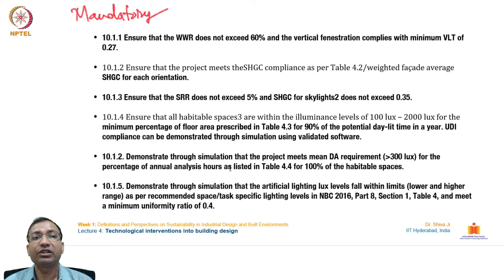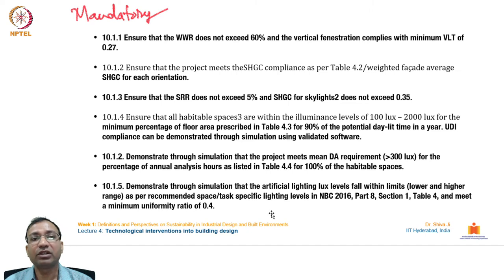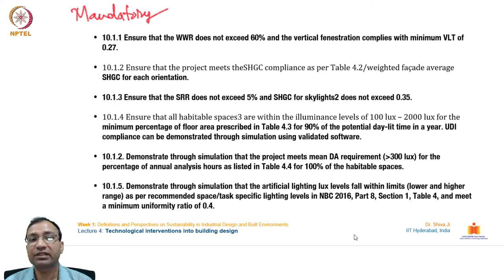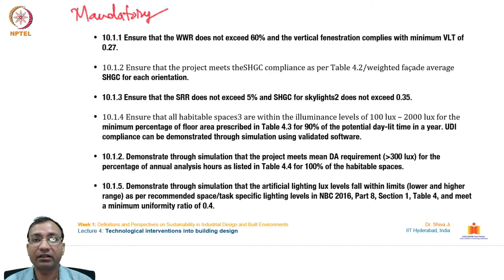Additional mandatory lighting requirements include: demonstrating through simulation that the project meets mean DA requirement of more than 300 lux for the prescribed percentage of annual analysis hours for 100% of habitable spaces; and demonstrating that artificial lighting levels fall within lower and higher range limits per NBC 2016 Part 8 Section 1 Table 4, with a minimum uniformity ratio of 0.4.